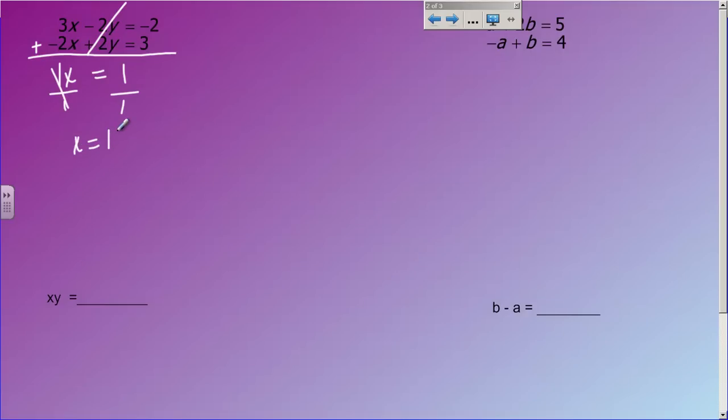Now again, you're only halfway done, because now I have to go find out what y equals, and I treat this the same way as I did when doing substitution. I take what I know about x, and I substitute it into one of my original equations. In this case, it doesn't matter which one. I'm going to use the top one. So I'm going to do 3 times 1 minus 2y equals negative 2.